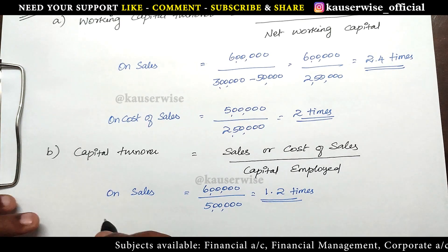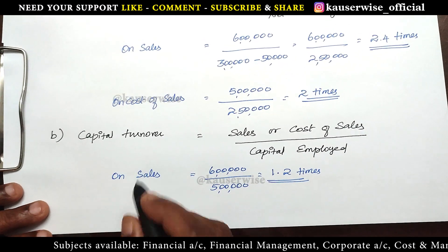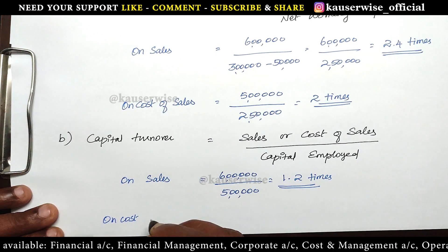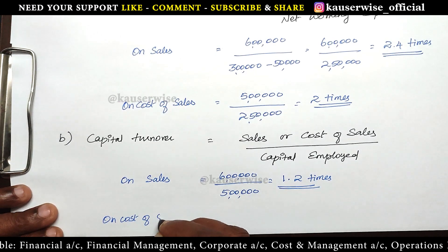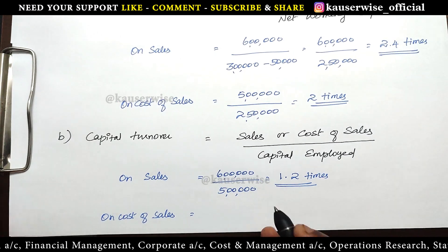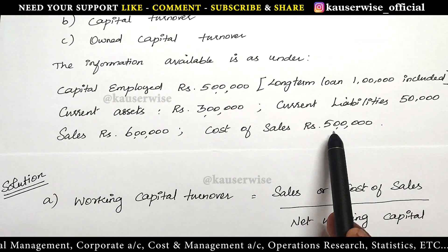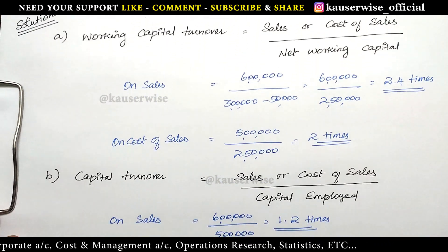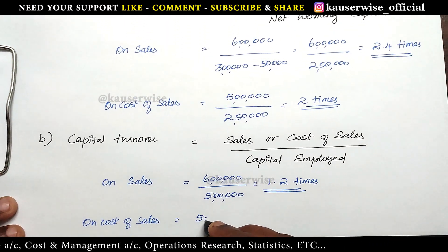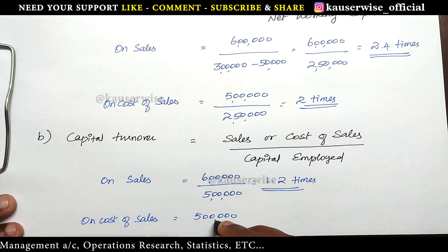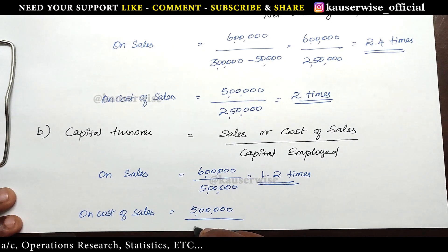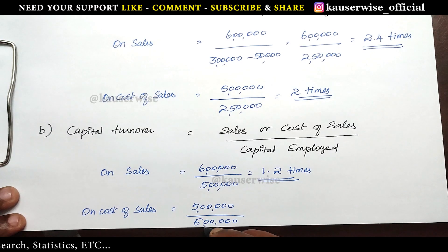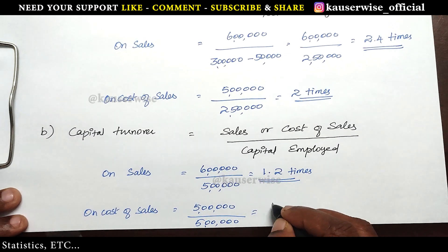In the same way we are going to find out the capital turnover ratio on cost of sales. Cost of sales is 5 lakhs divided by capital employed, which is also 5 lakhs. So the answer is 1 time.